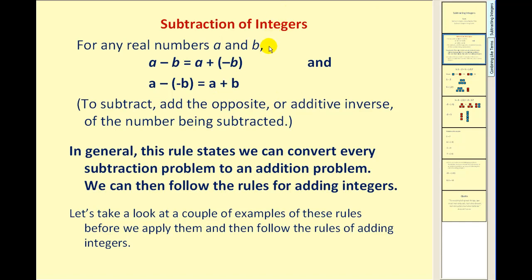For any real numbers, including integers a and b, a minus positive b is equal to a plus negative b, and a minus negative b is equal to a plus positive b.